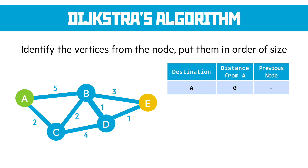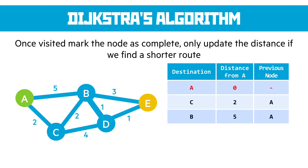With Dijkstra's algorithm, we start at one location and work our way to the final location, identifying the vertices from each node and putting them in order of size. If we start with node A, the vertices that connect from A are C and B. C has a distance of 2 and B has a distance of 5, so we put them in order: C then B. Once there are no more vertices to explore from A, we mark A as completed. We only update the distance value of a completed node if we find a vertex with a shorter path to it.